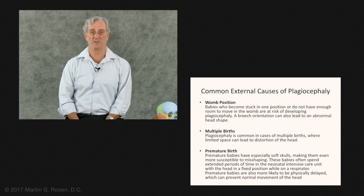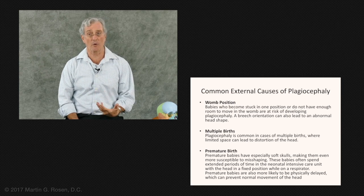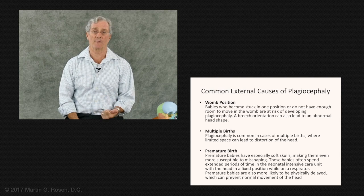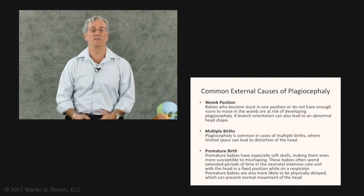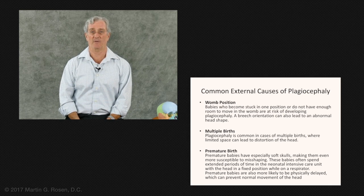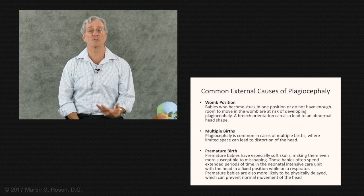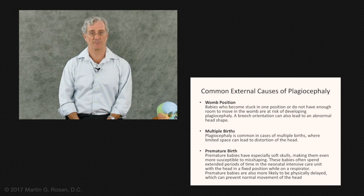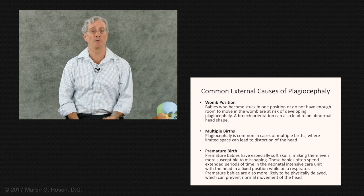Number one, the womb position. Babies who get stuck in one position in the womb, do not have enough room to move, or the womb is tilted or constrained in some way, have a higher risk of developing plagiocephaly. A breech presentation can also lead to abnormal head shape. The next factor is multiple births.